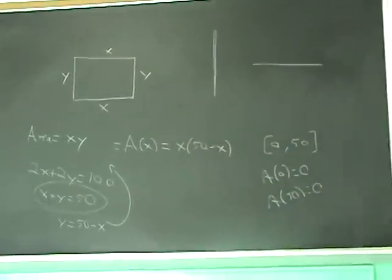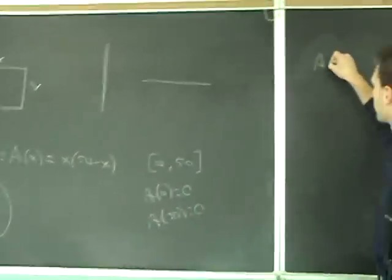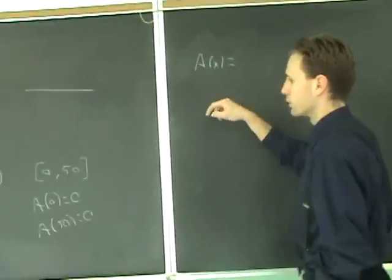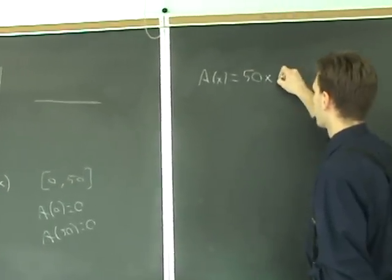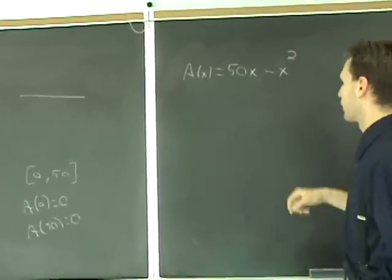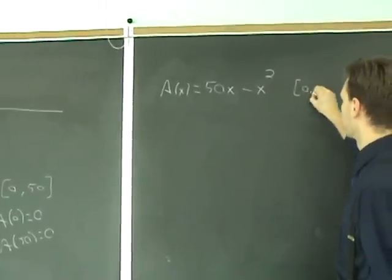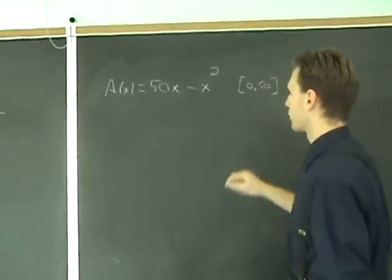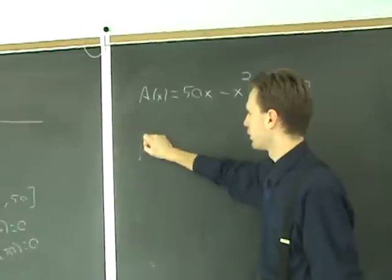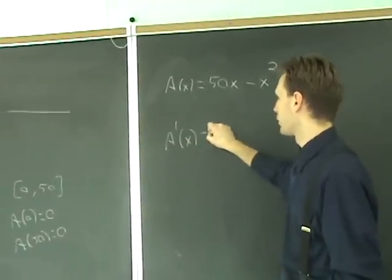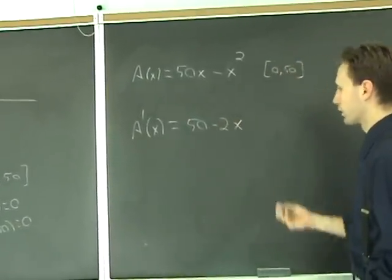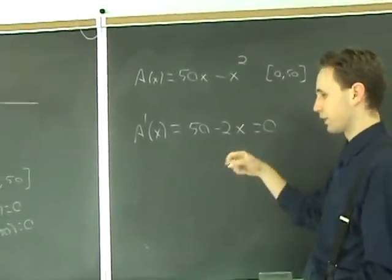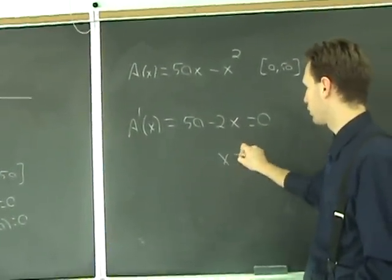Maximize this. So, we want to maximize A of x equals, if you distribute that out, you get 50x minus x squared. Maximize this on the interval zero to 50. We did the end points, so we've got to hunt for critical numbers. So, A prime equals 50 minus 2x. And, when you set that equal to zero, you get the critical number of 25.